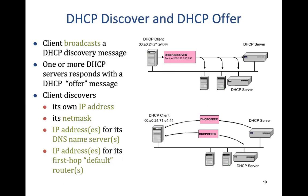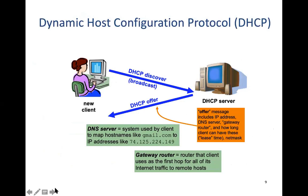This slide shows the first two steps of DHCP communication. First, Alice's machine sends a DHCP Discover message as a broadcast. If there are multiple DHCP servers, both will receive it because it is a broadcast message — everyone on the network receives it. Both DHCP servers will respond back with a DHCP Offer. The offer contains the IP address, netmask, IP address of the DNS server, and the default router address.